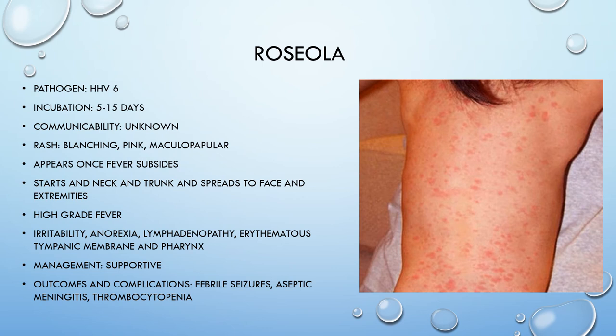Moving on to roseola, caused by human herpesvirus 6, with an incubation of 5 to 15 days, and unknown communicability period. The rash is blanching pink and maculopapular, and often appears once a fever subsides. It starts on the neck and trunk, then spreads to the face and extremities. It's associated with high-grade fever, irritability, anorexia, lymphadenopathy, and erythematous tympanic membranes and pharynx. Management is once again supportive. Complications include febrile seizures, aseptic meningitis, and thrombocytopenia.